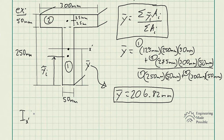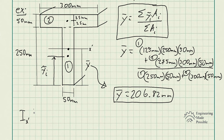Now we solve for the area moment of inertia about the x-prime axis. For a T-beam, we cannot use the simple rectangle formula directly. Very similarly to finding the centroid of composite areas, we solve for the area moment of inertia of each simple geometry and then add them up to get the total area moment of inertia for the entire T-beam structure.